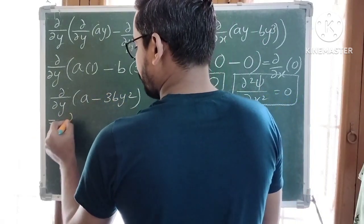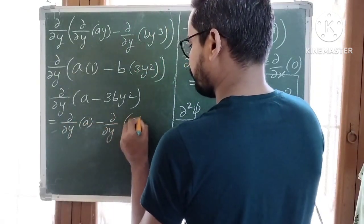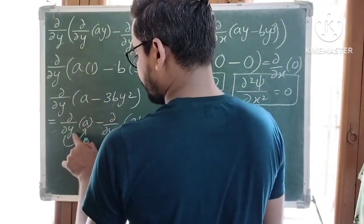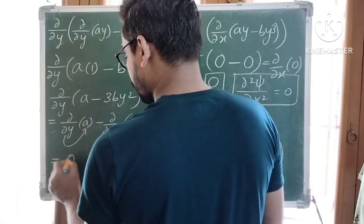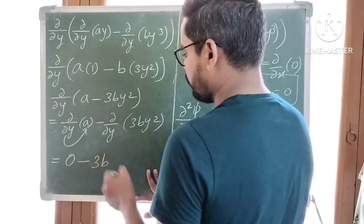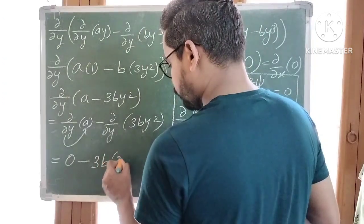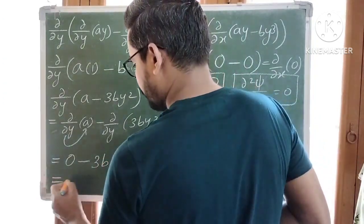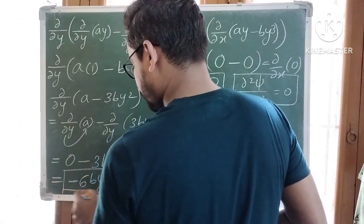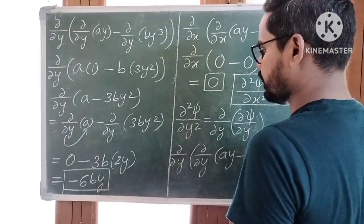Now again, ∂/∂y of (A minus 3By²). ∂/∂y of A minus ∂/∂y of 3By². The derivative of the constant term A with respect to y is 0. Here 3B is a constant, so we take out 3B from the derivative. The derivative of y² with respect to y is 2y. Finally, we get minus 6By. Therefore, ∂²Ψ/∂y² equals minus 6By.